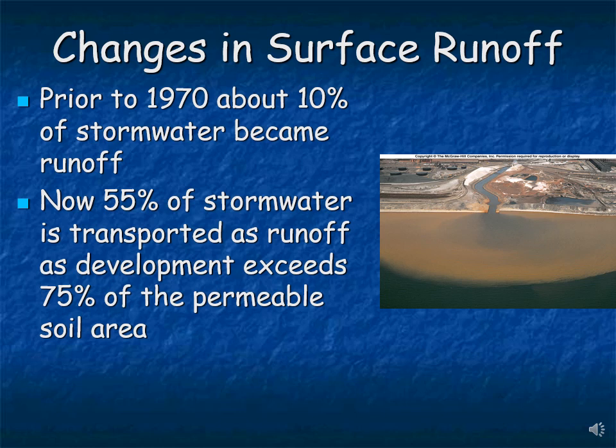Prior to 1970, about 10% of stormwater became runoff. Now in the United States, about 55% of stormwater is transported as runoff because development has significantly reduced the amount of land where water can infiltrate. The amount of concrete, asphalt, parking lots, and structures in a city like Salt Lake City versus 50 years ago has greatly reduced available land for infiltration — so rain is more likely to become stormwater runoff than to infiltrate into groundwater.